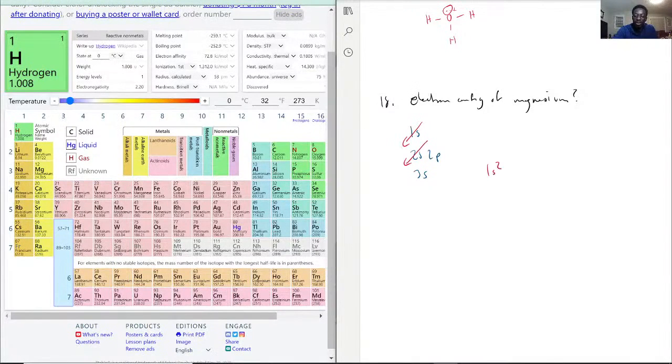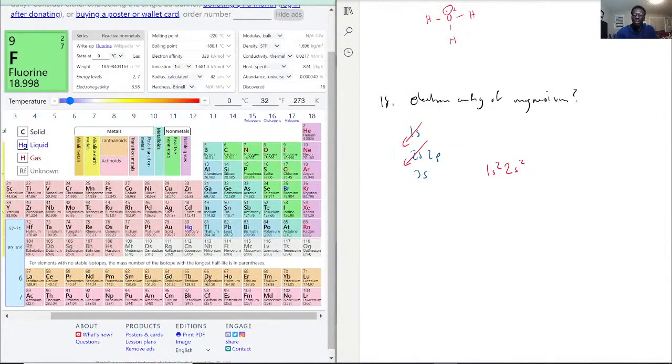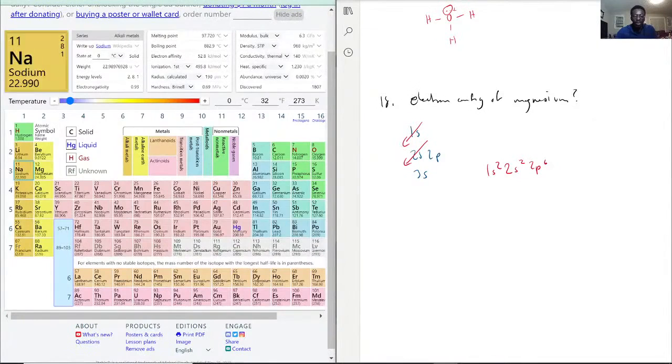So right now we have 1s², 2s² because those are checked off, and we're also going past boron through neon, so that would be 2p⁶, and then we actually stop at 3s².